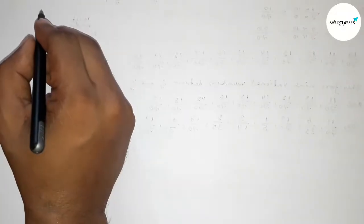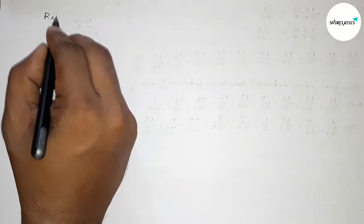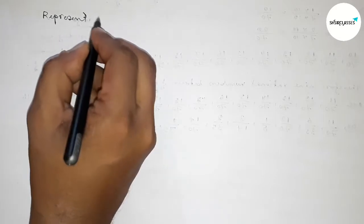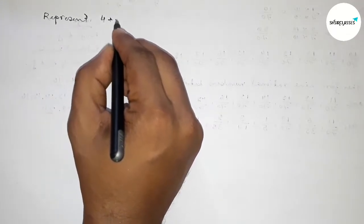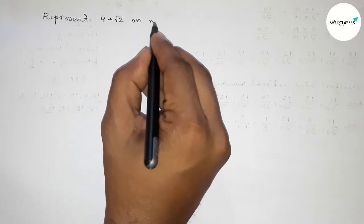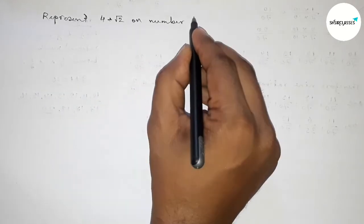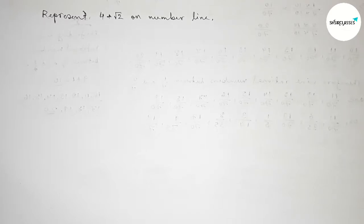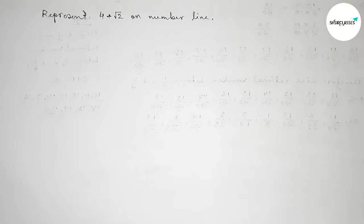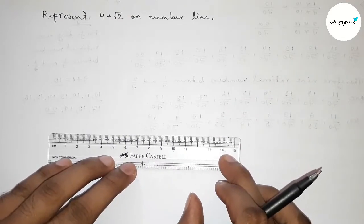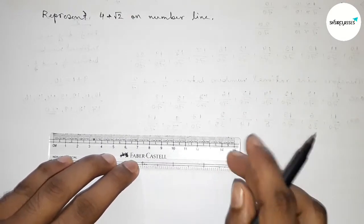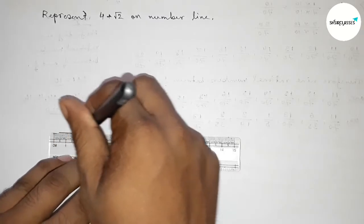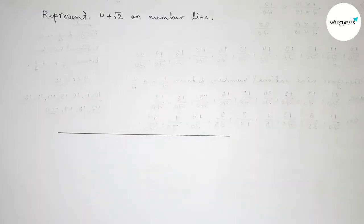Hi everyone, welcome to SI Share Classes. Today in this video we have to represent 4 plus root 2 on a number line in an easy way. So please watch the video till the end. Let's start the video. First of all, we have to construct a number line by using a scale, so first drawing here a line of any length and taking arrow marks on both sides.